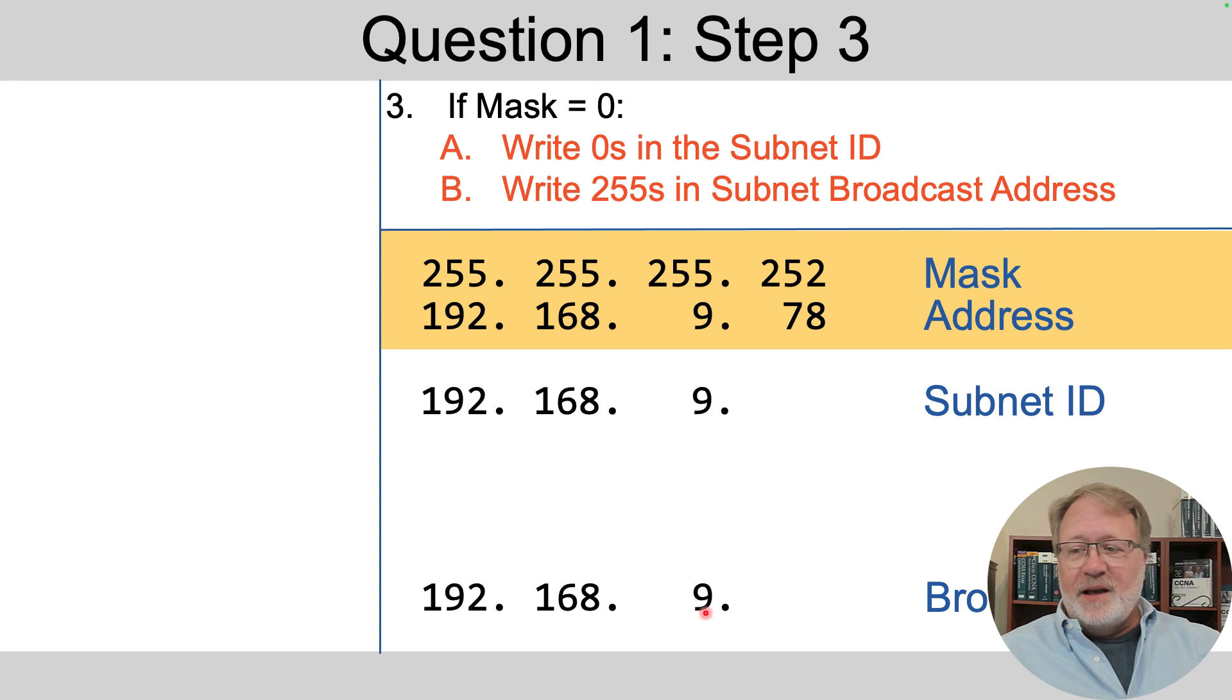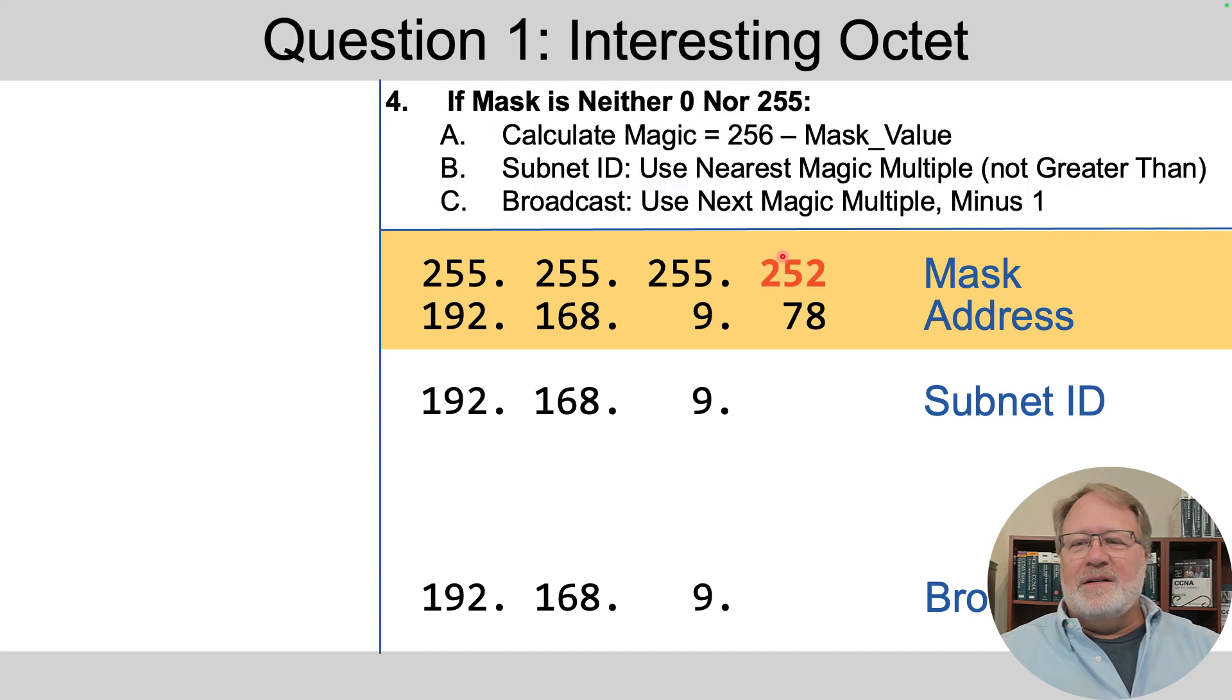So at step three, it says if the mask is zero, well, the mask isn't zero. So that's a big do nothing at step three. It's there in case the mask has a value of zero in one or more octets. Then at step four, if the mask is neither a zero nor a 255, well, that is the case here.